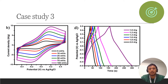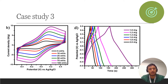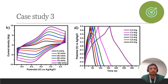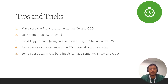The last case study, Case Study 3, involves a negative potential window — from negative 0.5 to positive 0.5 volts. This applies when you are dealing with a symmetrical supercapacitor. When you are working in a negative-to-positive range, your GCD should also follow that same range. As shown on the right-hand side, the GCD potential window starts from negative 0.5 to positive 0.5 volts.